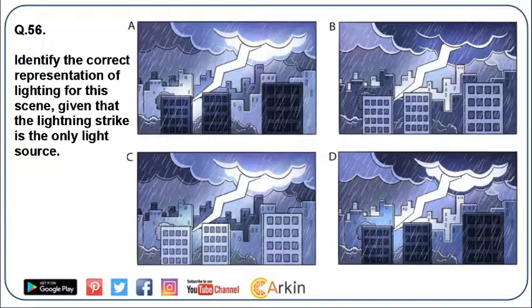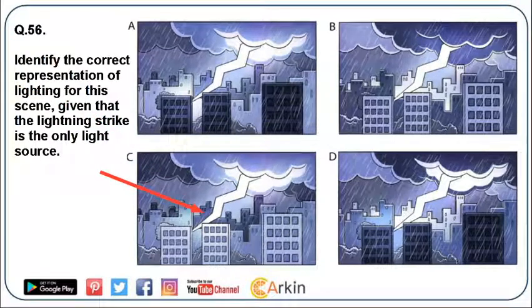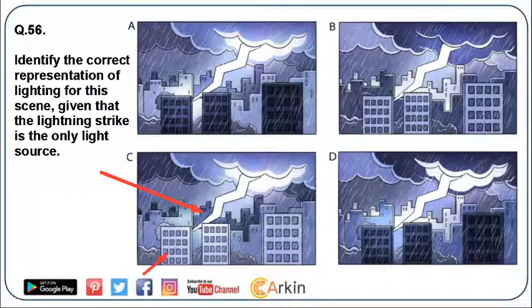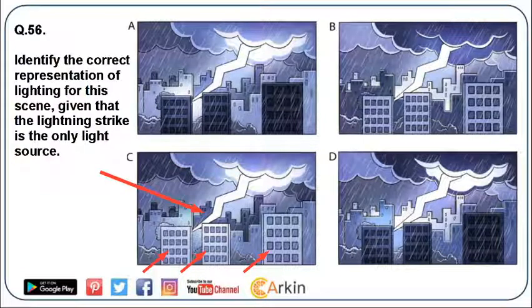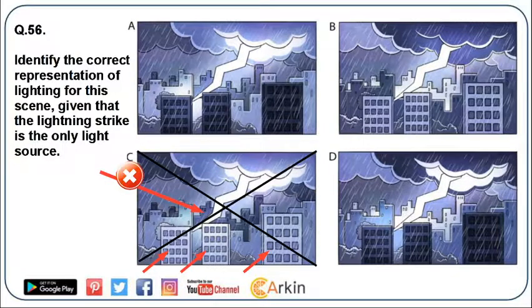Now let us eliminate wrong answers. Observe this image carefully. Lightning is striking between buildings — it is behind the front row of buildings, so the portion in the center must look brightest. In option C, the surface of the buildings in front is very bright. Since there is no other source of light other than lightning, these front buildings will look dark. So option C is not correct.